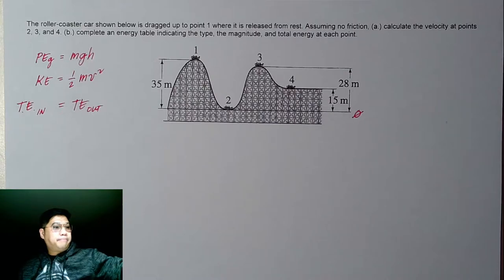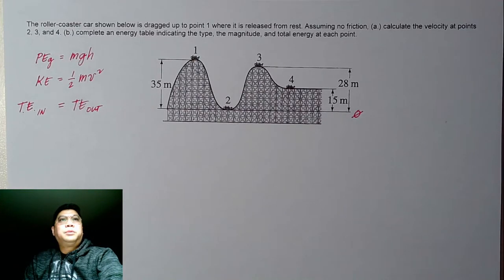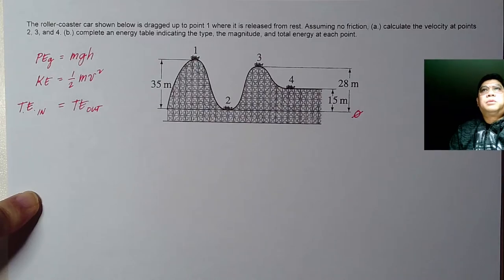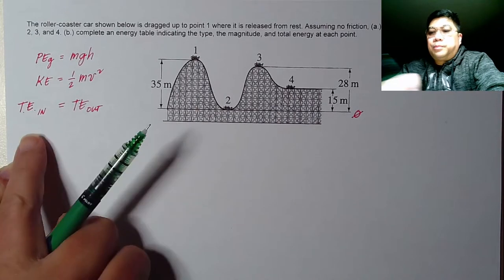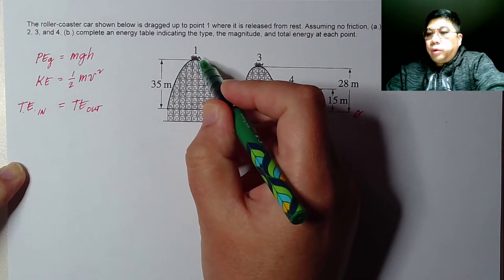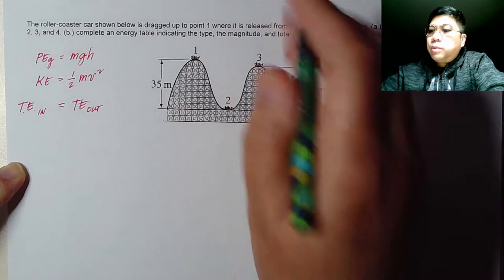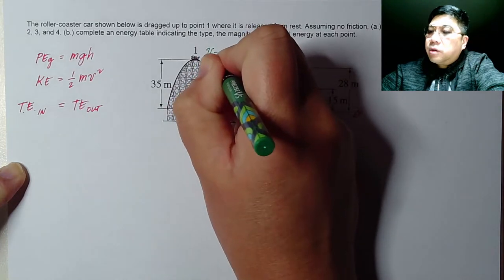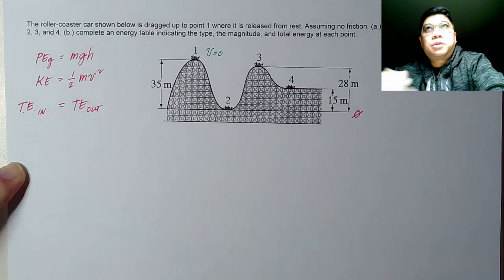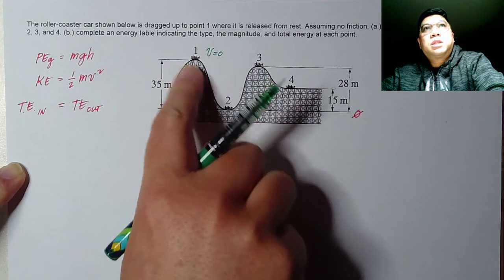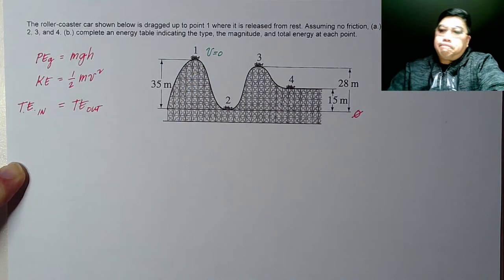Let's begin analyzing point one. At point one, the initial velocity is zero, because the roller coaster doesn't start to move until it's allowed to coast down from the top hill. So in the beginning, there is no velocity yet.